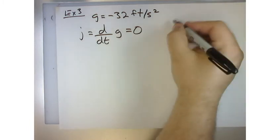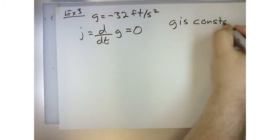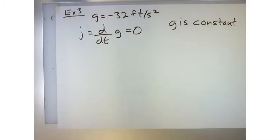Why? Because g is a constant. So we don't feel a jerk because the acceleration is constant. There's no change. In fact, well, you do feel a jerk at first, right?